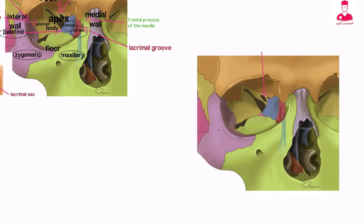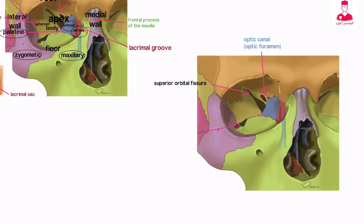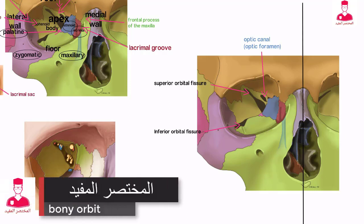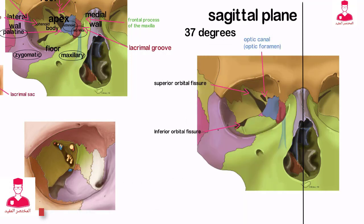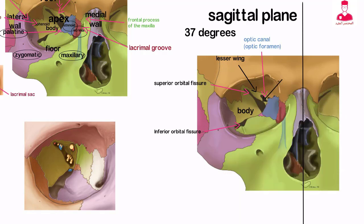The posterior portion of the orbit, or the apex, is basically formed by the optic canal, optic foramen, and the superior orbital fissure. The optic canal and the superior and inferior orbital fissures allow various structures to enter and exit the orbit and establish communication between the orbit and the middle cranial fossa. The optic canal forms an angle of about 37 degrees with the sagittal plane of the head, and is bound medially by the body, superiorly by the lesser wing, and inferiorly and laterally by the optic strut, the inferior root of the sphenoid bone.